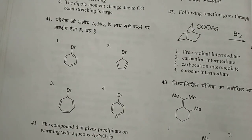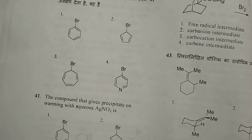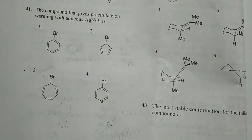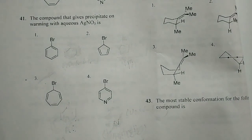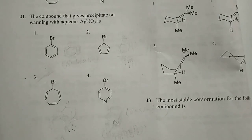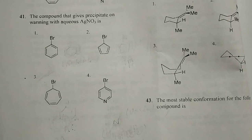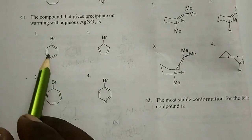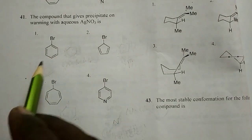The compound that gives a precipitate on warming with aqueous AgNO3 — if you warm with AgNO3 and get a precipitate, it means a silver halide is formed. Here, everywhere there are bromines, so the precipitate is silver bromide. After losing the bromide ion, the corresponding cation remains.